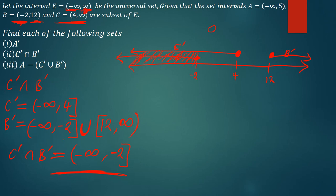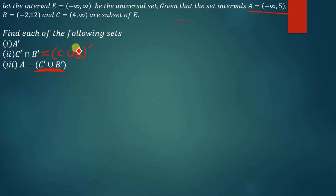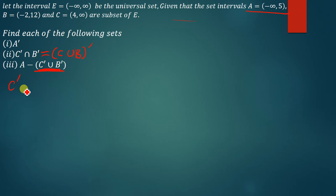For the last question, we already have A, so no need to find it again. This expression can also use De Morgan's rule: C complement union B complement equals (C intersection B) complement. Using BODMAS, we start with what is in the brackets — C complement union B complement — which by De Morgan's is equivalent to finding C intersection B first, then taking its complement.